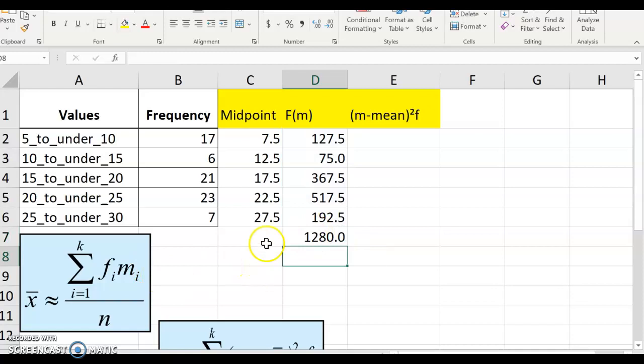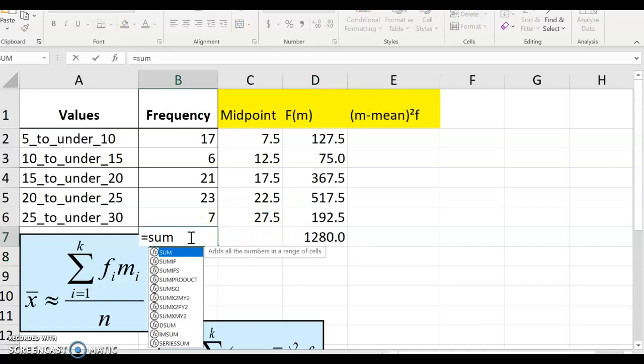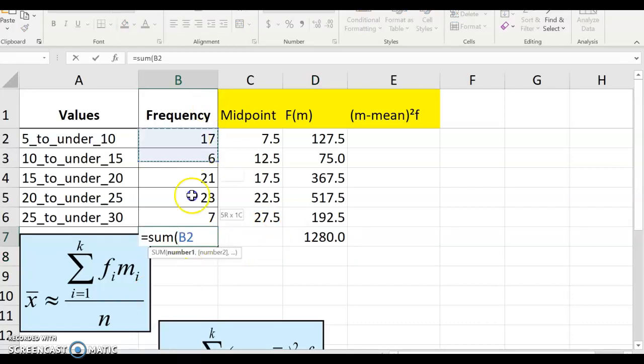Highlight it. And then we need to divide by n. So let's get n. n is the sum of your frequencies. So n is 74.